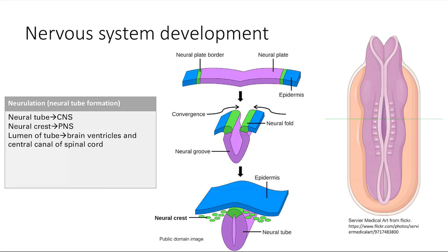Let's talk about development of the nervous system. This whole process is called neurulation. We start with this neural plate that folds up into a tube. It comes together to make a neural tube. The neural tube becomes the central nervous system — that is the brain and spinal cord. The neural crest becomes the peripheral nervous system — all the nerves that are not in the brain or spinal cord.